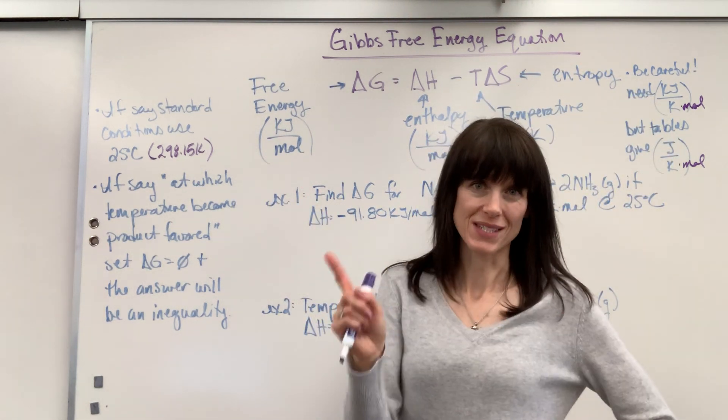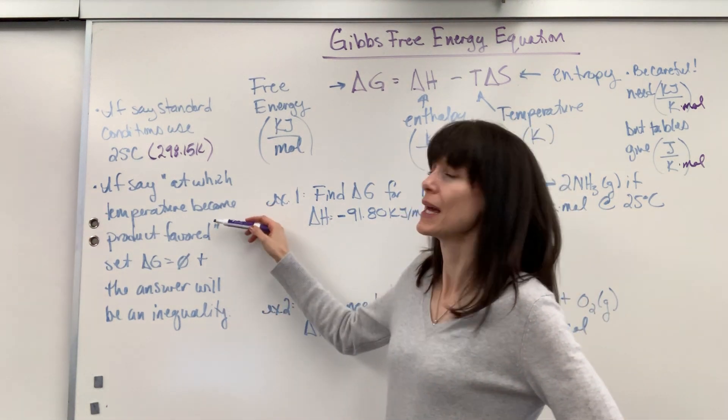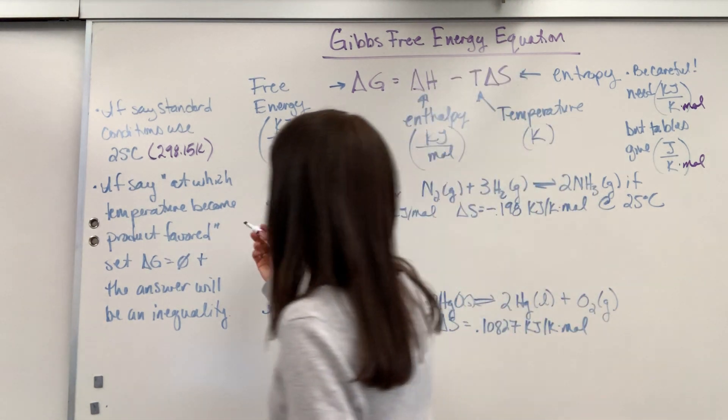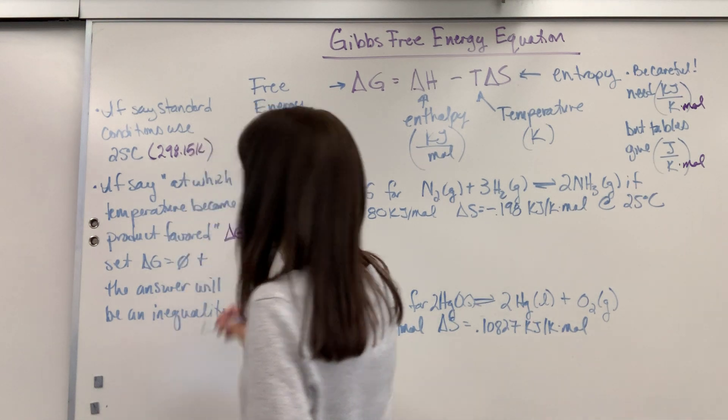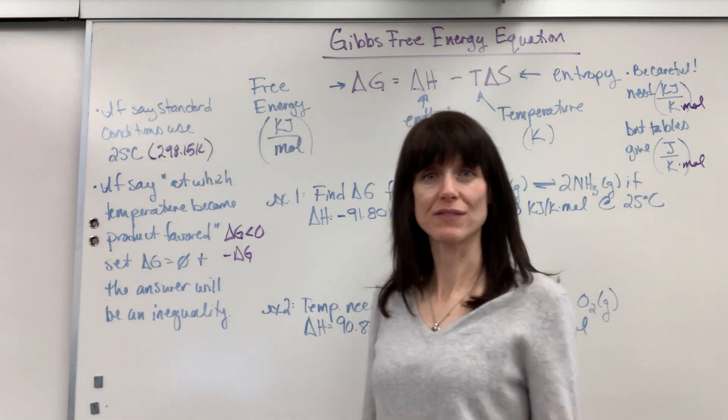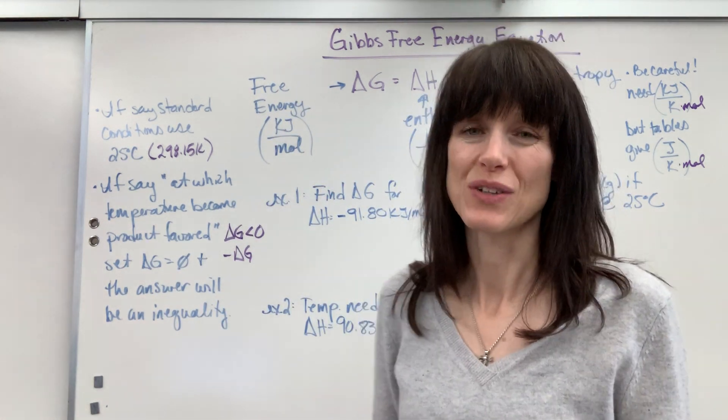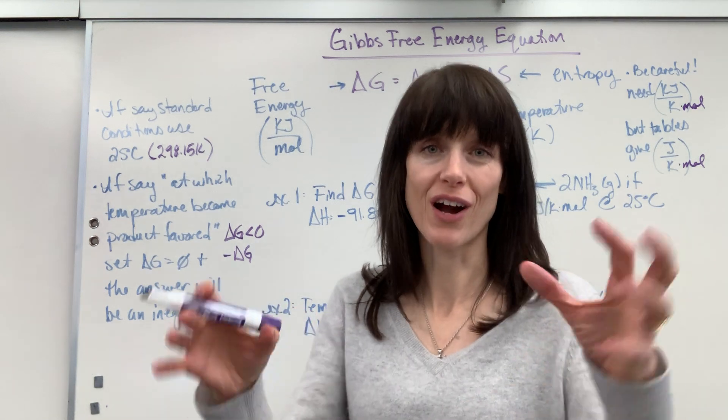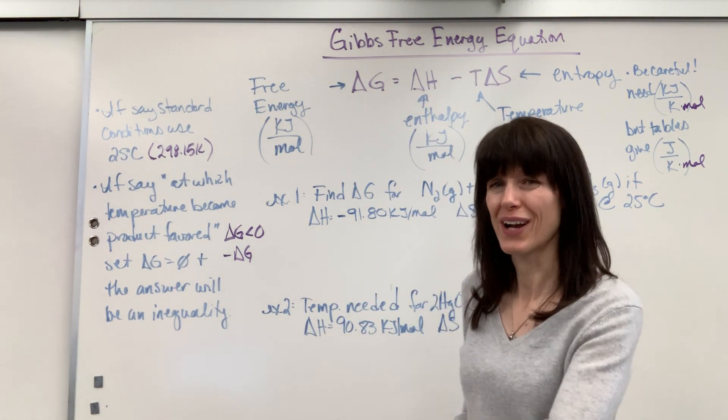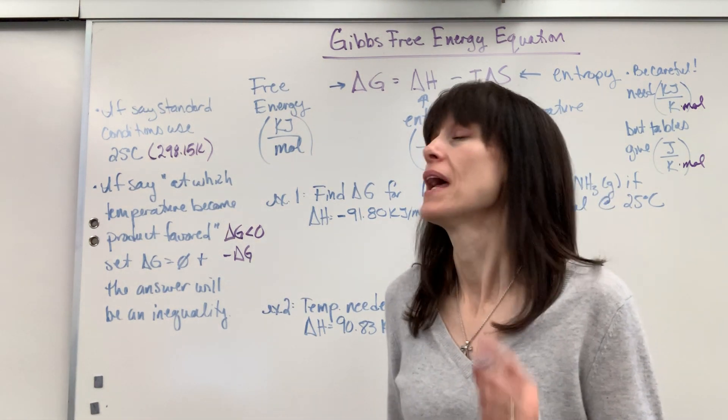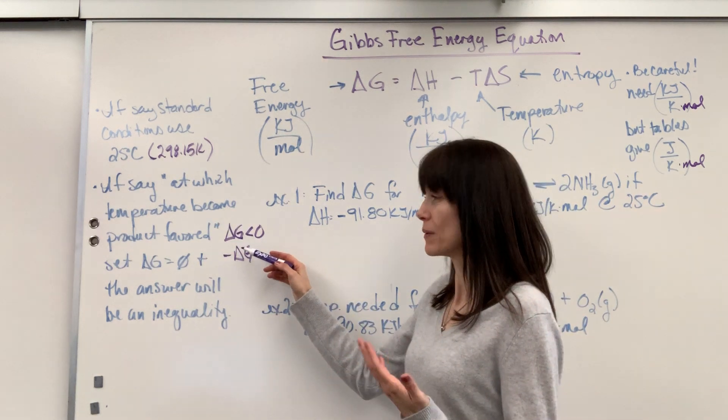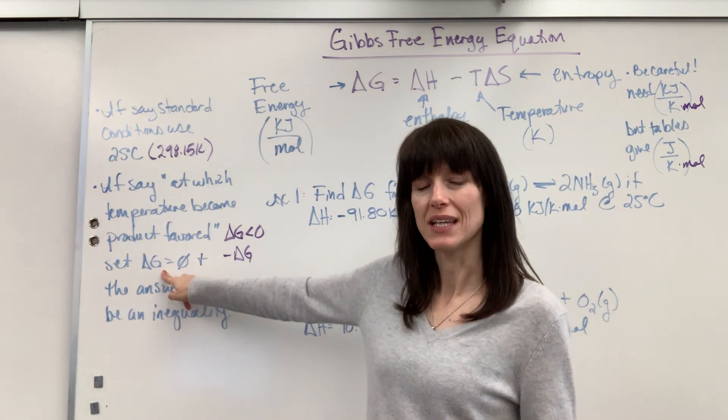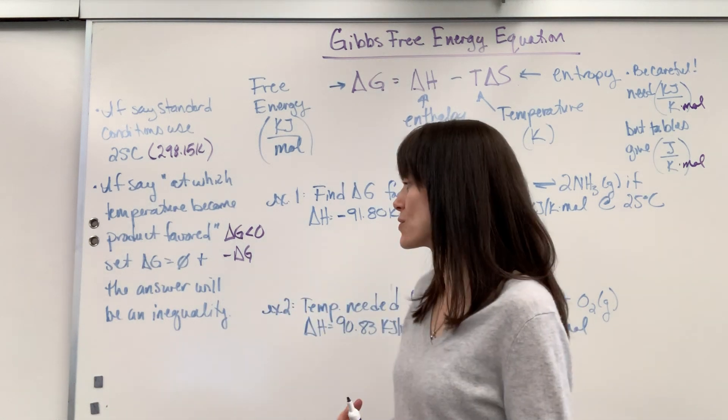Now, this is kind of interesting, a way that they can ask a certain question. They could say, at which temperature will this reaction become product favored? And so they're really saying, at what temperature will delta G be less than zero, that it will be negative. Because remember, negative delta G is spontaneous. That's going to be product favored. And when you have that negative delta G, there's energy available to do work. So here's the trick: if they want to know at which temperature it will become product favored, spontaneous, simply set delta G equal to zero. And then from there, the answer will be an inequality.